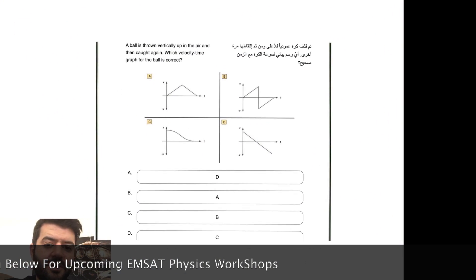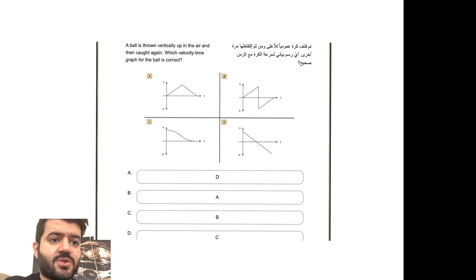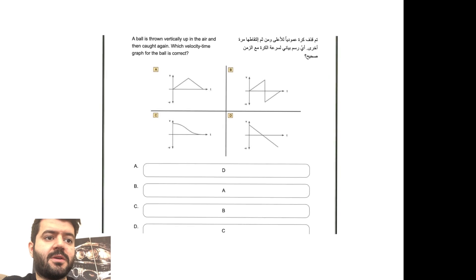In front of us right now we have a question straight from the mechanics section of the MSAT physics practice and preparation. This question is specifically targeting projectile motion. A ball is thrown vertically up in the air and then caught again. Which velocity graph for the ball is correct?